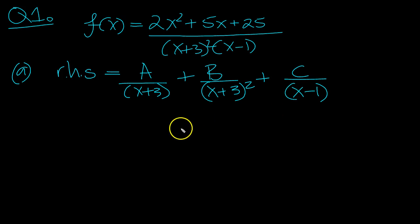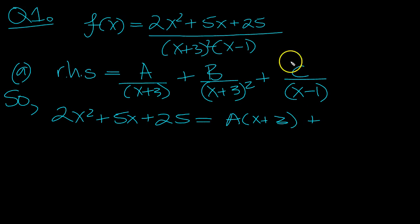Okay, so multiply by the denominator gives just the thing on top then. X plus 3 times X minus 1 plus B, X minus 1 plus C.